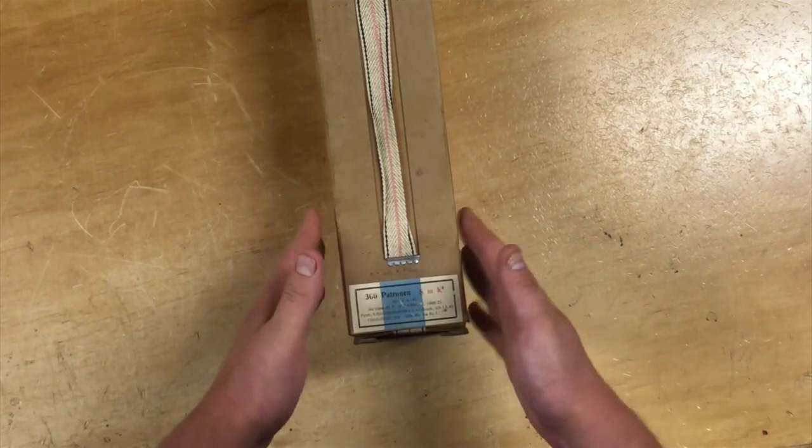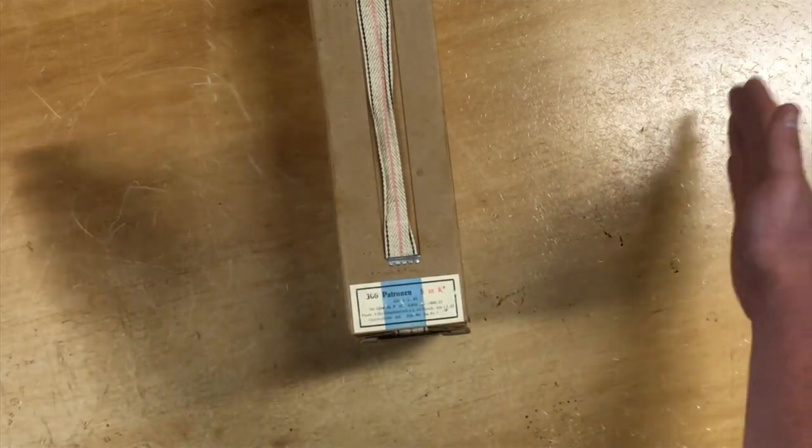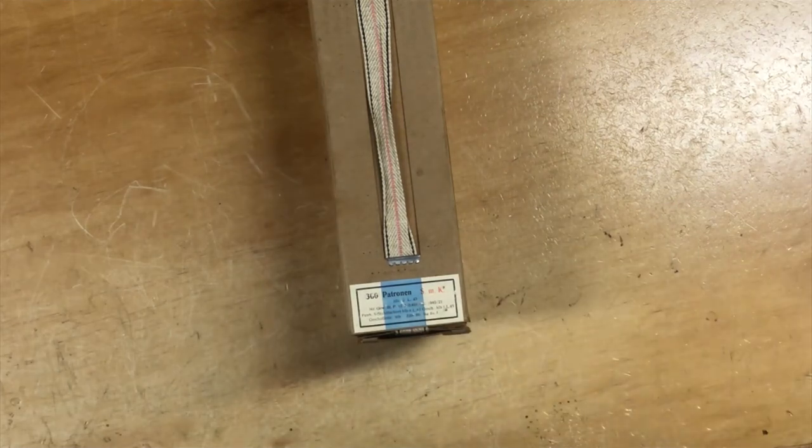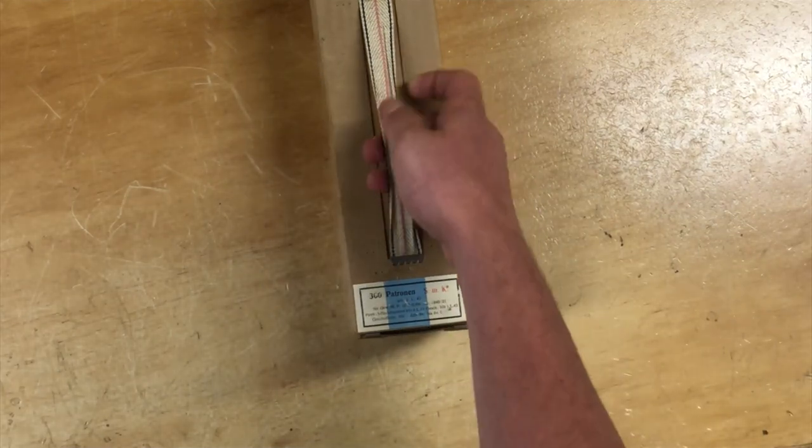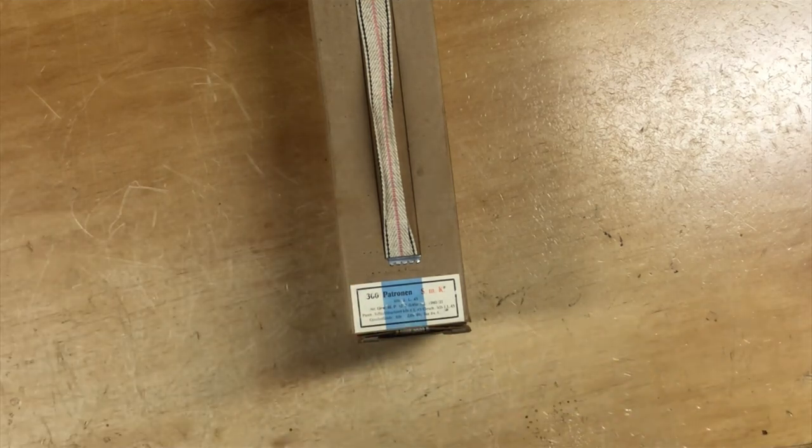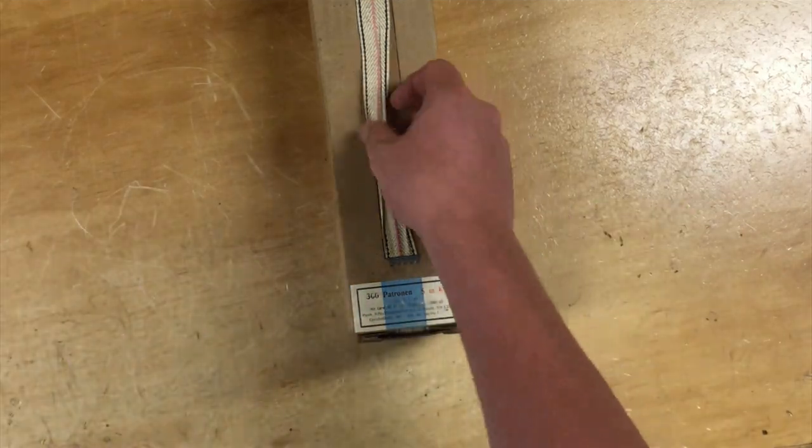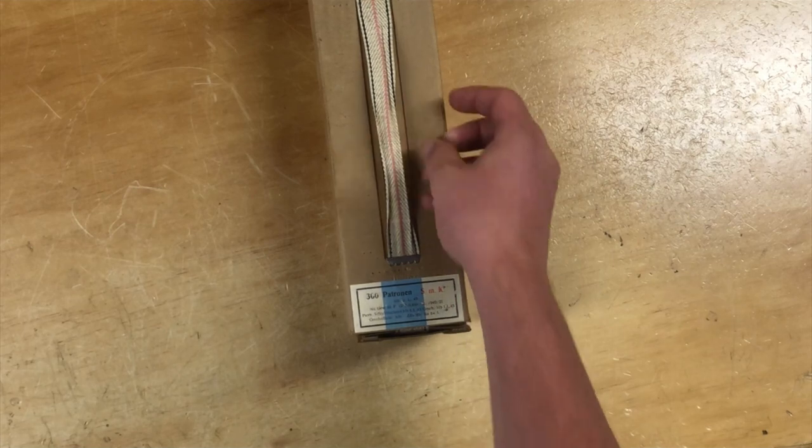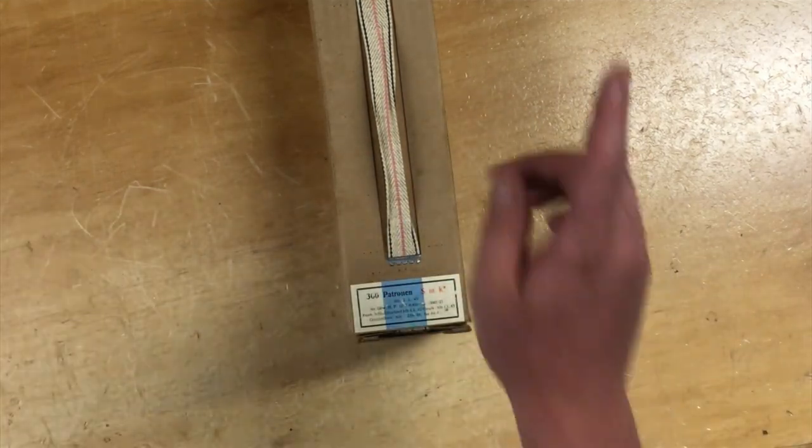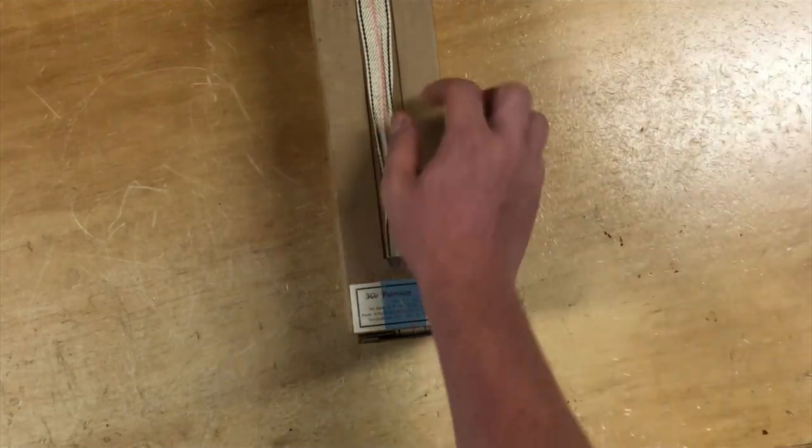This is how German ammunition would have come packaged for the Mauser rifle, machine guns in the field. They would come in a crate of I think five of these boxes stacked, and then these were called battle packs. You just grab one of these and you can run with it, you can load clips with it, you can load machine gun belts and all that stuff. So it was a pretty unique idea, whereas the Americans had ammo cans filled with bandoliers, so it's a different way of loading.